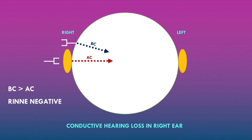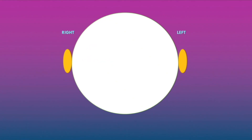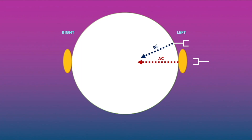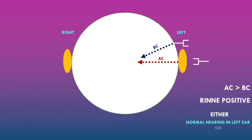When the Rinne test is performed on the left ear: the vibrating tuning fork placed on the mastoid bone tests bone conduction, and placed over the left ear tests air conduction. If the patient hears the sound loudest over the left ear, air conduction is greater than bone conduction — a Rinne positive test — indicating either normal hearing or sensorineural hearing loss in the left ear.